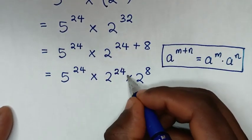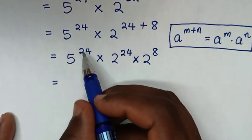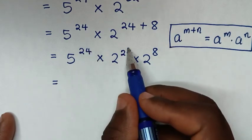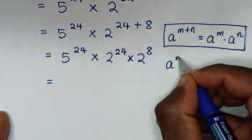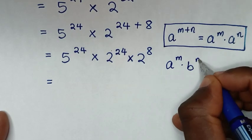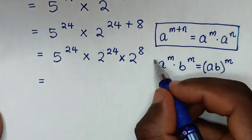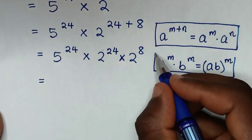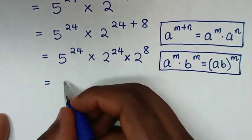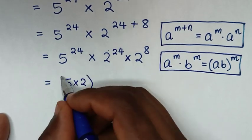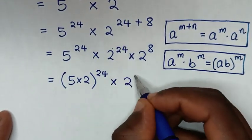We can place a times sign here. In the next step, we have the same power of 24 but different bases — 5 and 2. So we apply the rule: a power of m times b power of m equals a times b, bracket, power of m. Therefore, it will be 5 times 2, bracket, power of 24, then times 2 power of 8.